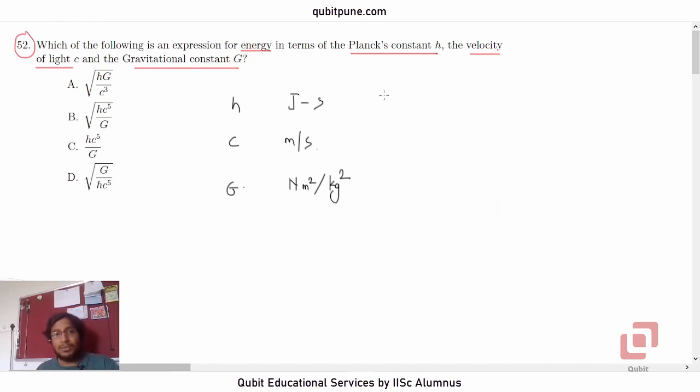Now, joule, that is energy, so it will be m1 l2 t negative 2, and into the second. So that is m1 l2 and t negative 1. What about c, speed of light? It is l1 t raised to negative 1.